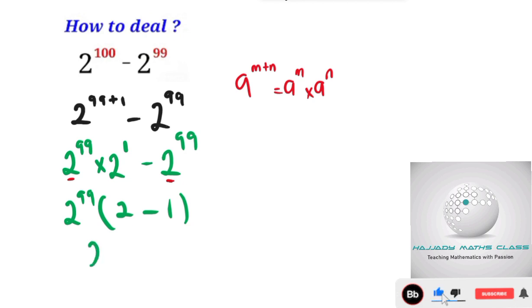So with this, we have 2 to the power of 99 multiplied by 1, which is the same thing as 2 to the power of 99.